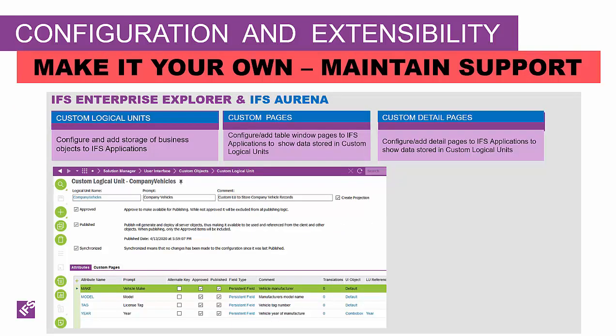Now we're going to take it up a notch and talk about custom logical units. The custom logical unit gives you the ability to create a new storage table for IFS business objects that don't already exist in the IFS application. Here you configure the attributes or columns — whether they're persistent or read-only — their types including text (with length), number, date and date-time, enumeration or combo box, and reference data. You can also specify whether or not they're indexed, which helps when searching on these different attributes. Once you've defined and published it to the database, you have the ability to create custom pages.